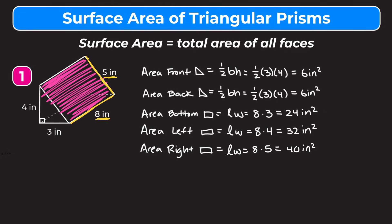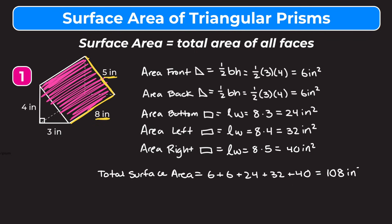Now that we've found the area of every face of our triangular prism, to find the total surface area we just add up all those areas. Total surface area equals six plus six plus 24 plus 32 plus 40 inches squared, which gives us a total surface area of 108 inches squared. Hopefully this video helped you understand how to find the surface area of triangular prisms — just remember to find the area of each face and then add up all those areas.